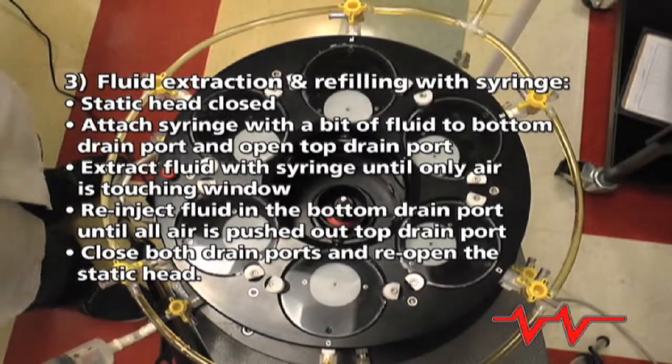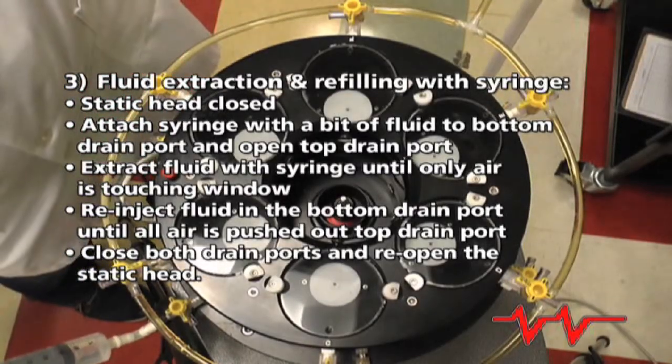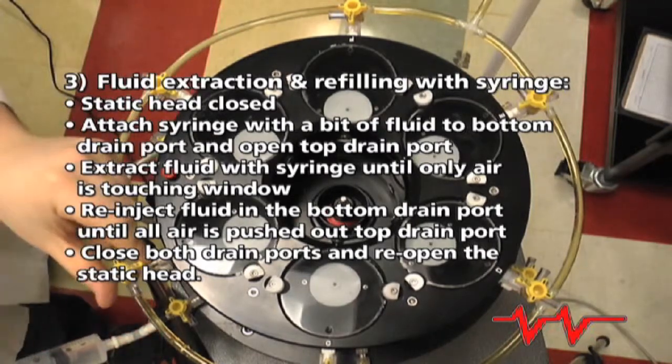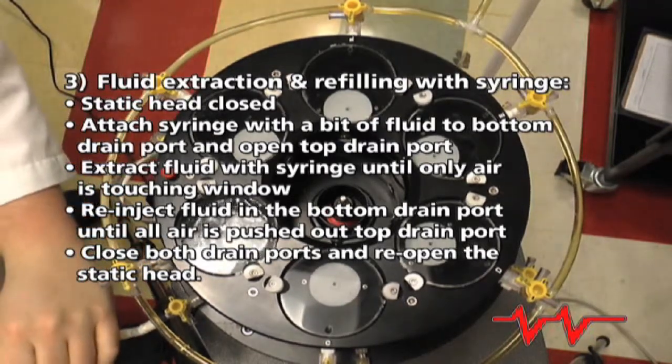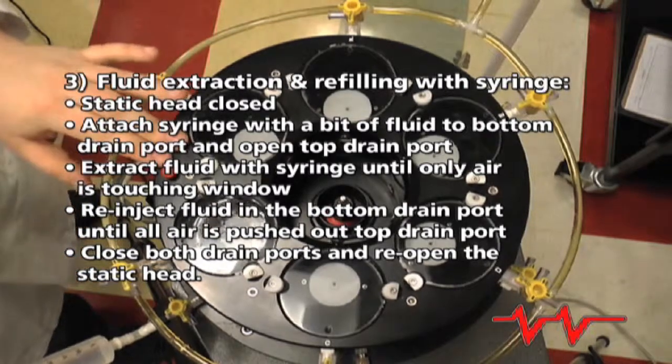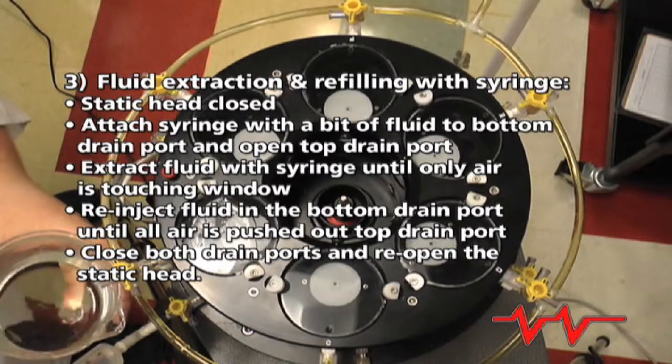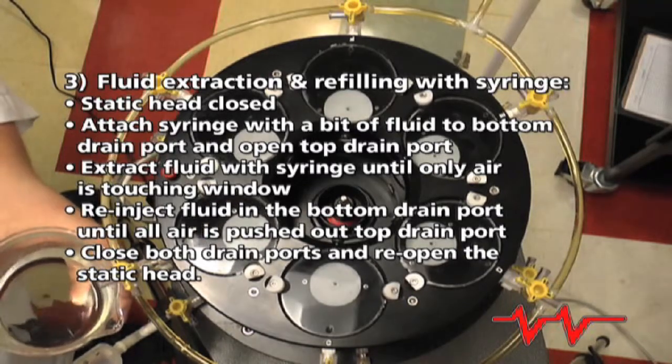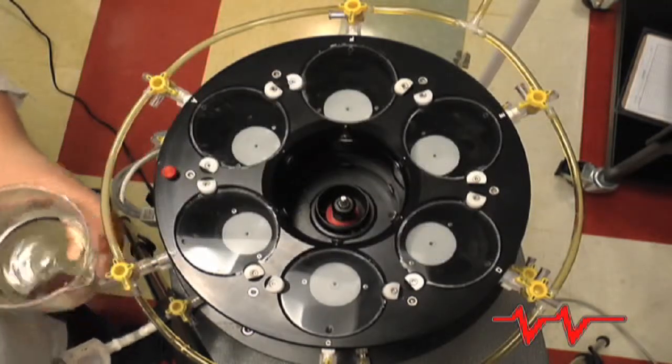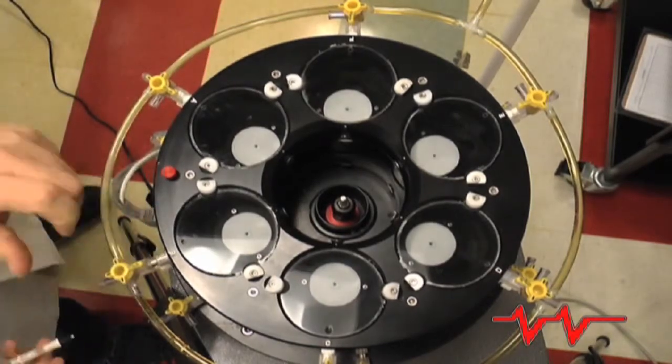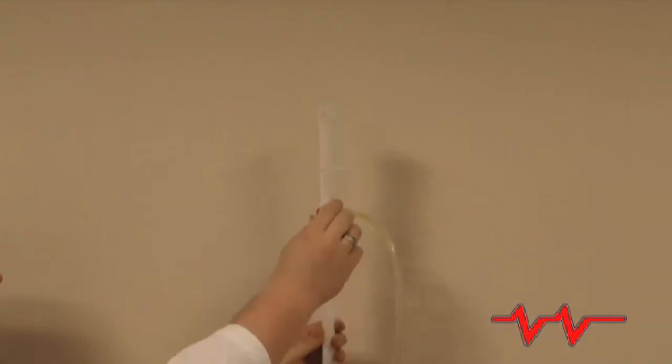With the static head closed, attach a syringe with a little bit of fluid in it to the bottom drain port and open the top drain port. Extract fluid with the syringe and allow the top of the chamber to fill with air until only air is touching the window. Re-inject the fluid in the bottom drain port until all the air is pushed out the top drain port, being careful not to re-inject air. Close both drain ports and reopen the static head.